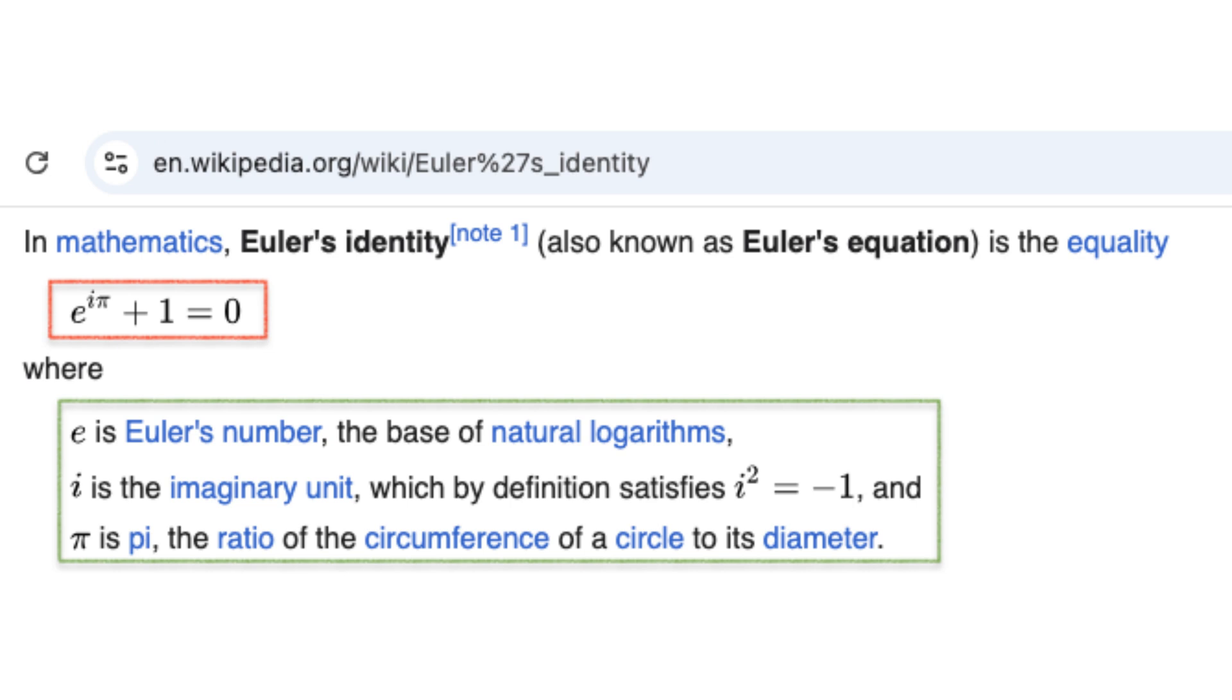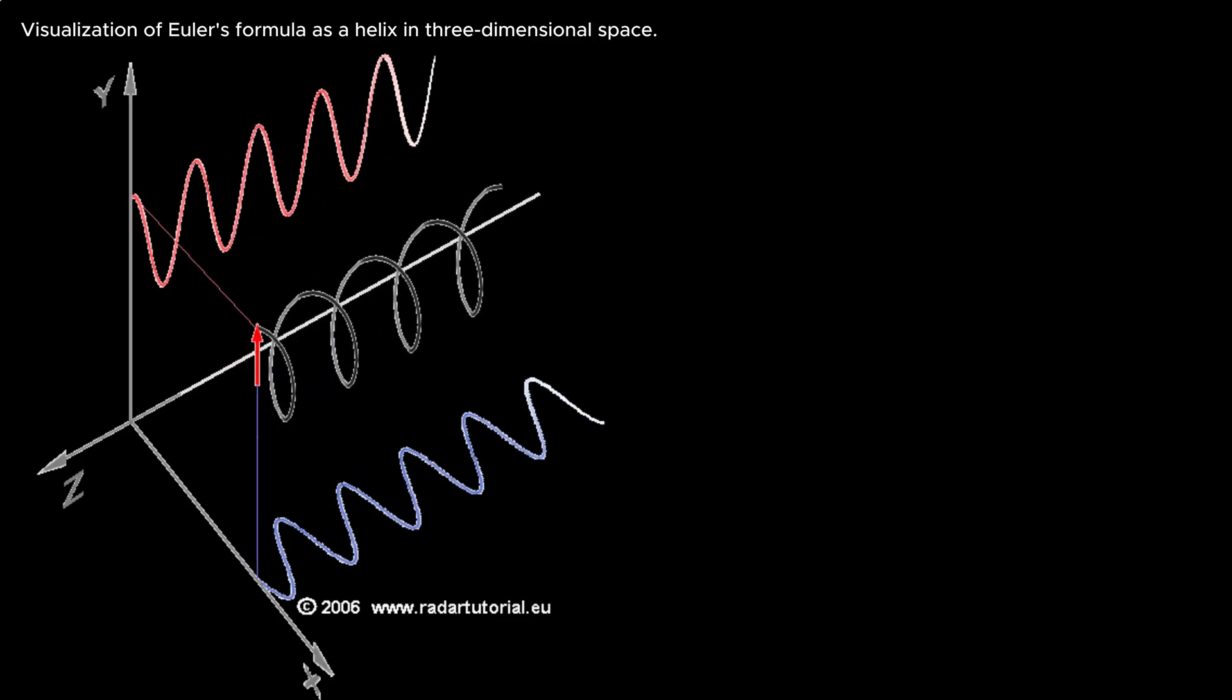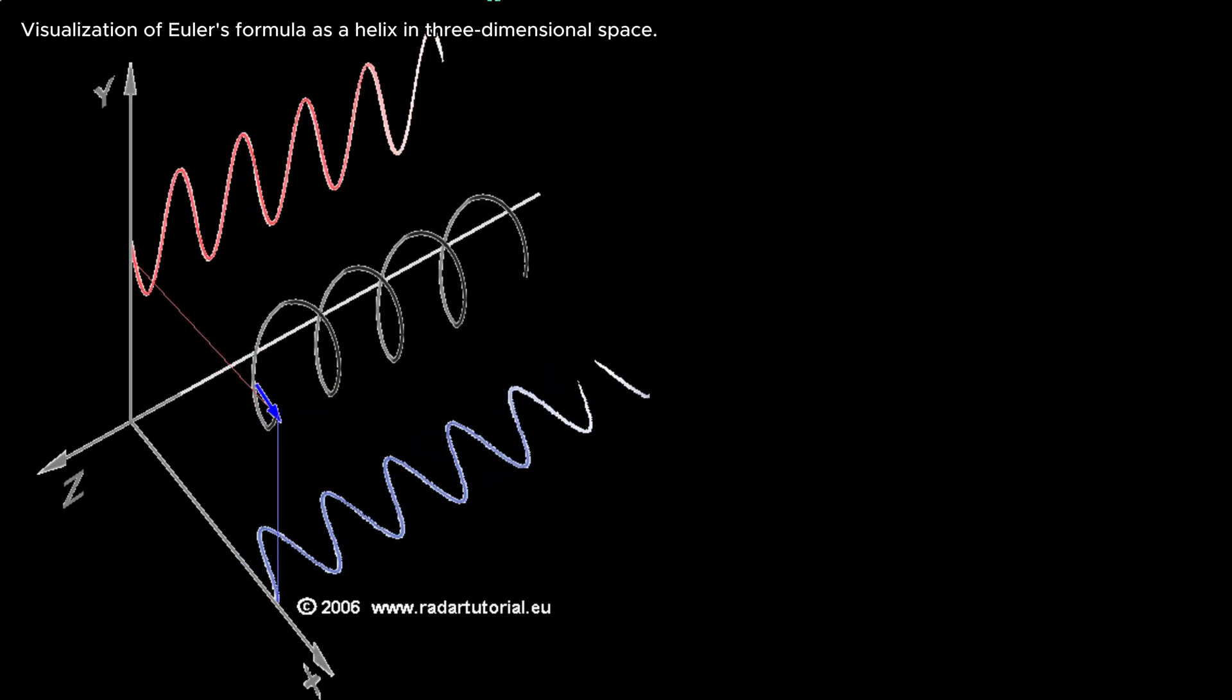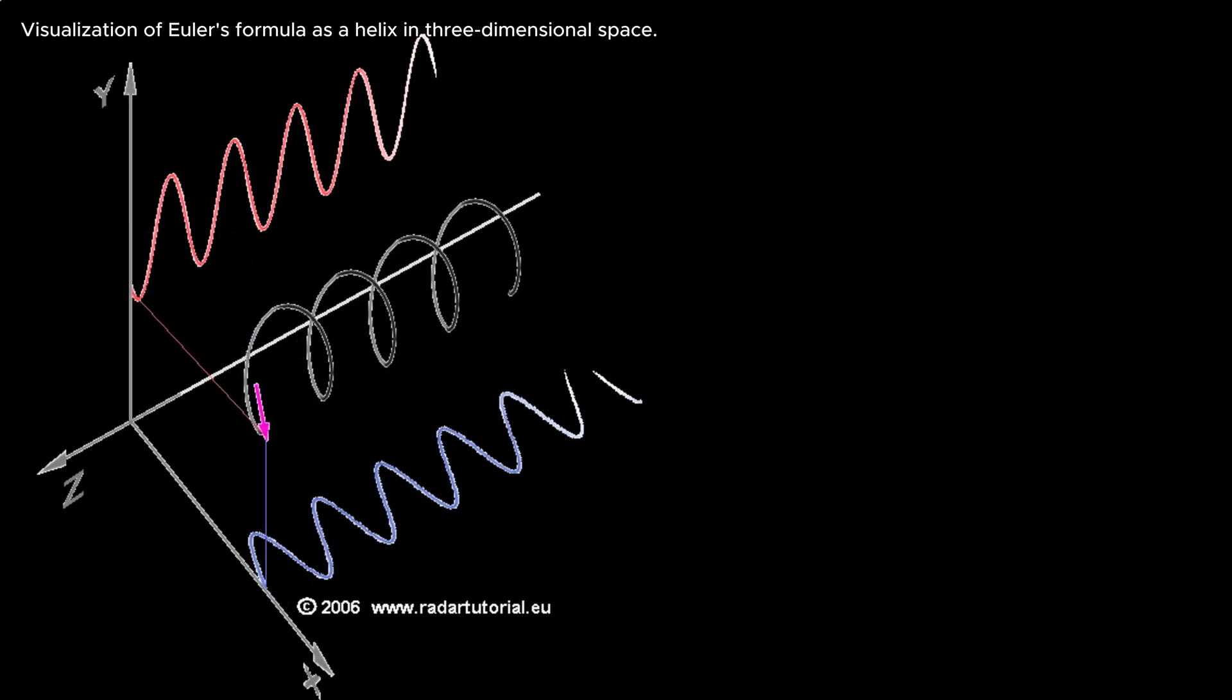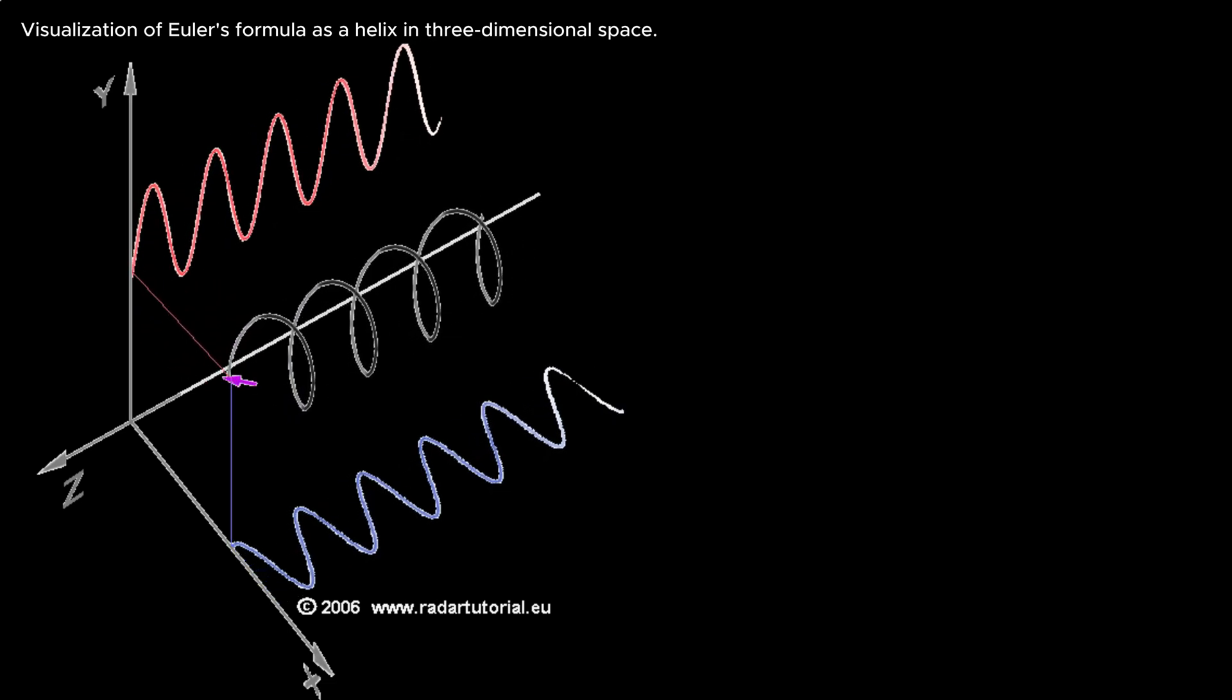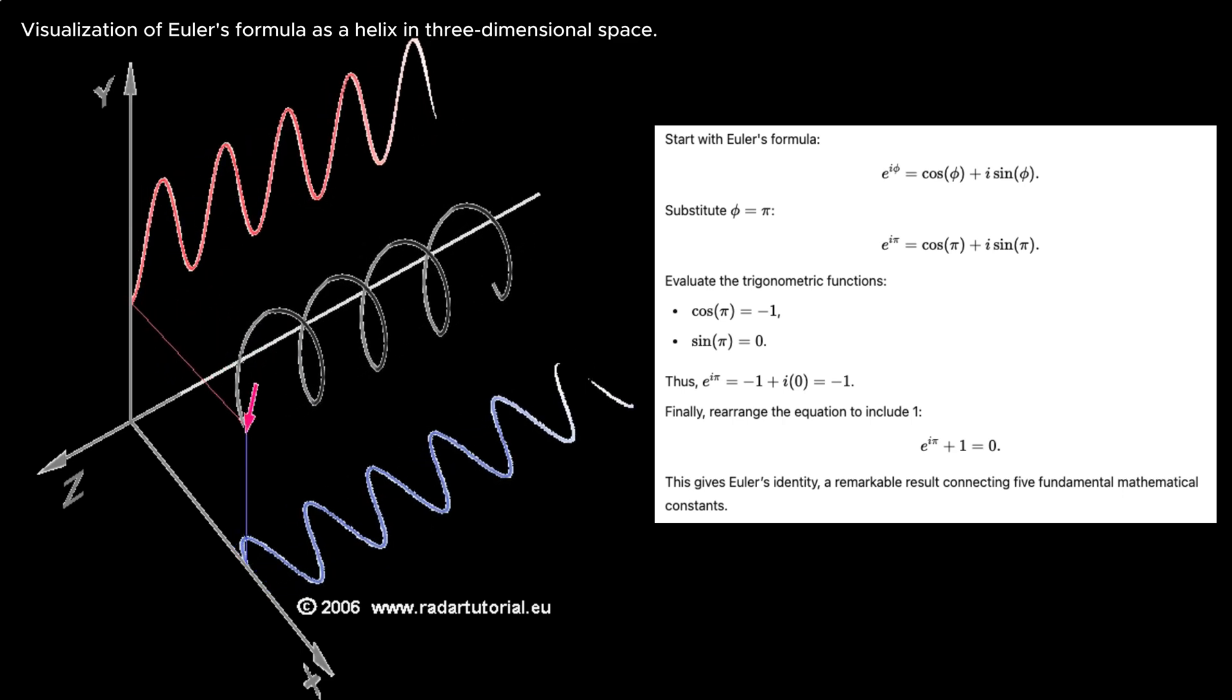Finally, the numbers 1 and 0. These five numbers, each representing a fundamental concept in mathematics, come together in a way that transcends their individual meanings, showcasing the interconnectedness of mathematics itself.